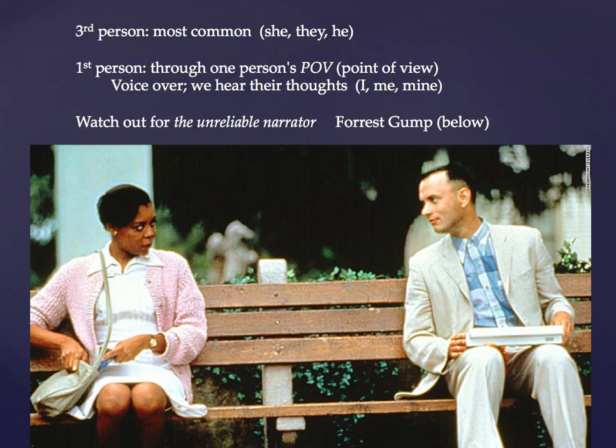Hitchcock preferred third person because he could show the audience a bomb under the table that the characters don't know about — that's how you build suspense. But first person gives us access to characters' inner thoughts, which is also very powerful. We also have to watch out for the unreliable narrator. In Forrest Gump it's played for laughs — Forrest mentions his friend bought him stock in a fruit company, which turns out to be Apple. He's definitely an unreliable narrator, but we're in on the joke.